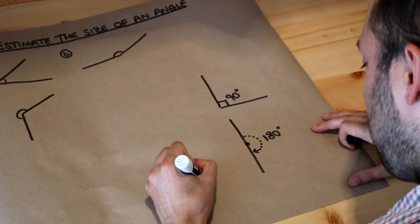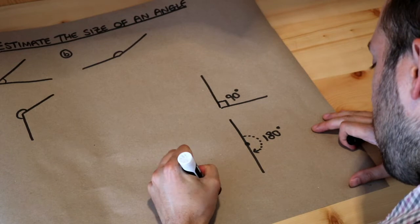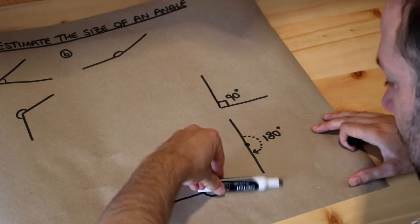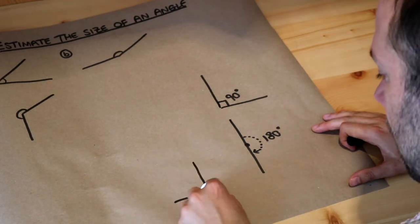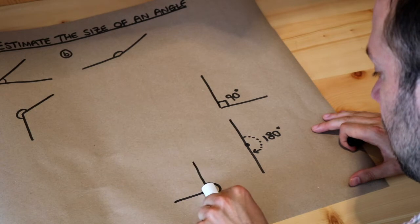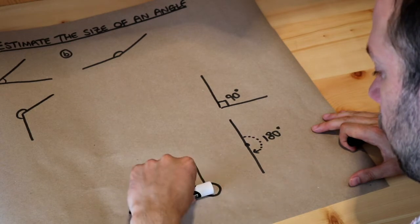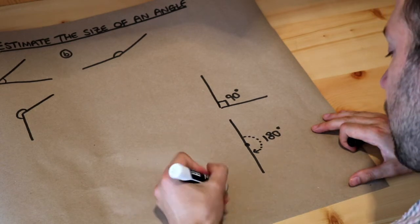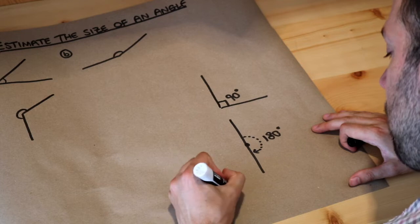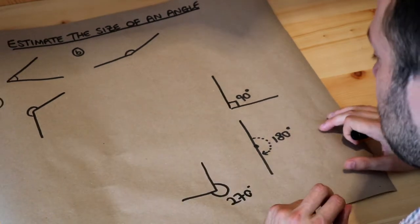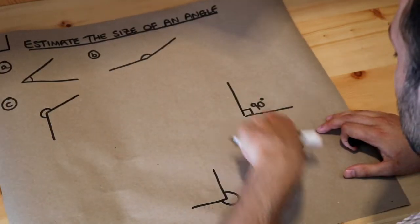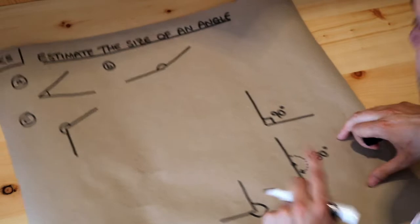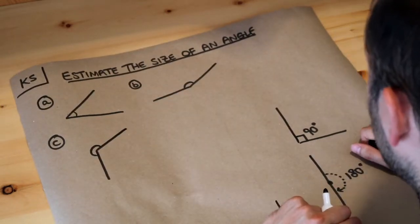And then finally, if we have this angle here — a half spin would be 180 degrees, and then another quarter spin would be another 90 degrees — so in total that would be 270 degrees. We can use these as reference points to estimate different angles.